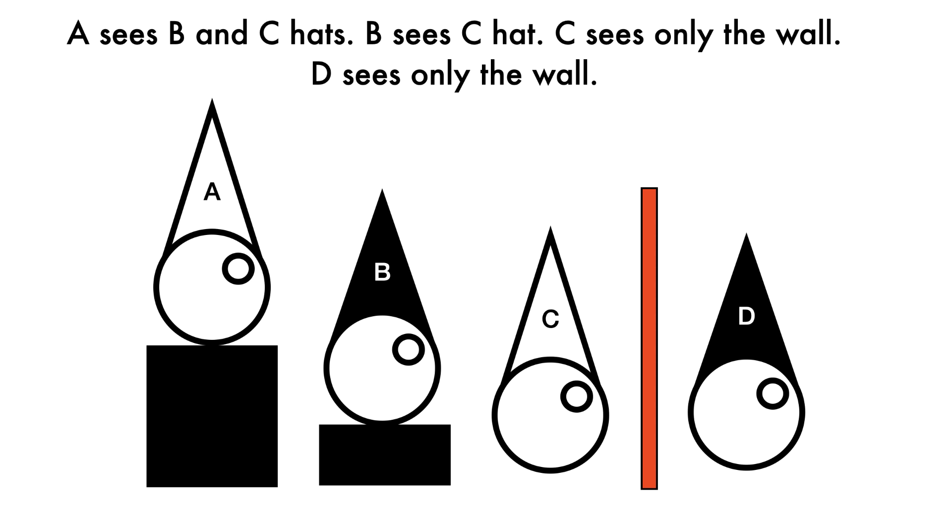Three prisoners stand in a line facing a brick wall. The prisoner at the back, A, stands on a box and can see both of the prisoners in front of him, B and C.